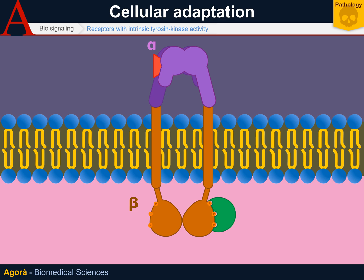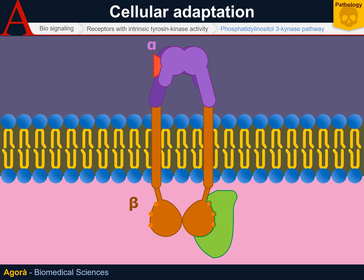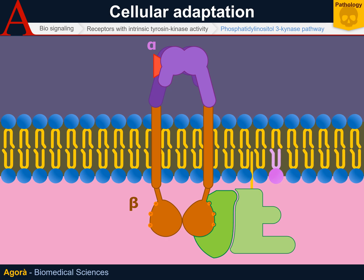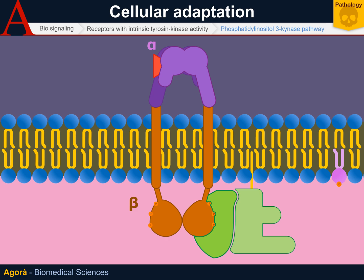The ligands of this type of receptor are mainly growth factors and, therefore, play an important role in cell growth and, as a consequence, in cancer development. An intrinsically connected pathway to the receptors of tyrosine kinase activity is certainly that of phosphatidylinositol-3-kinase, an enzyme that can bind the receptor of the intrinsic tyrosine kinase activity through an adapter molecule. Once the enzyme is bound to the receptor, it begins its enzymatic activity by phosphorylating phosphatidylinositol, which is a membrane phospholipid. Phosphatidylinositol-3-phosphate then moves into the membrane and searches for other proteins to continue the transduction pathway. AKT, also known as protein kinase B, is certainly one of the most known proteins interacting with this second messenger — it is a mediator in cell survival.